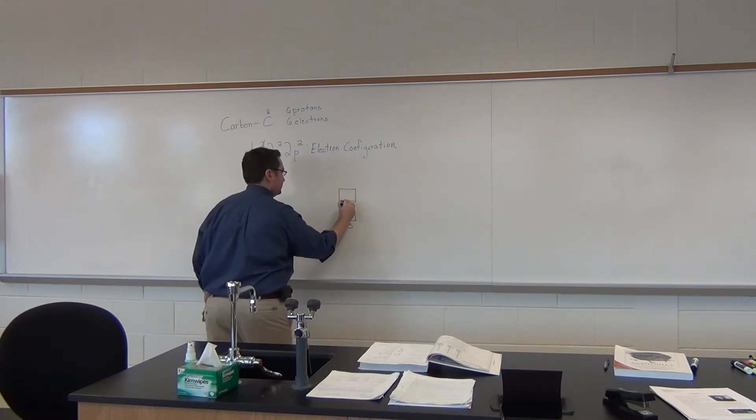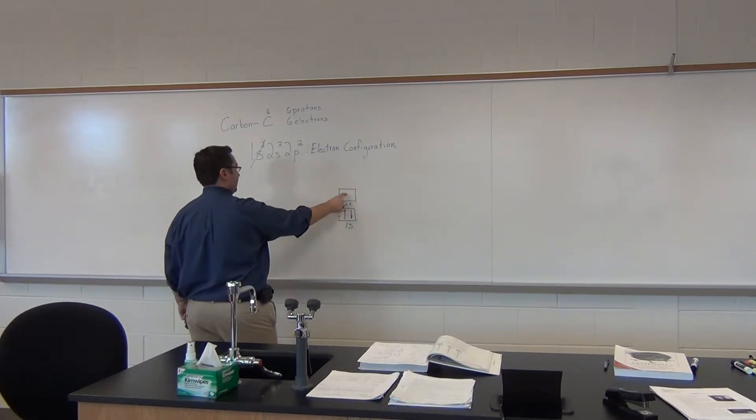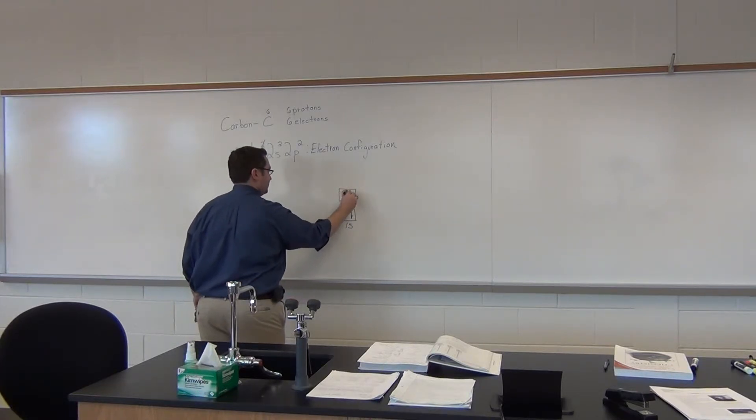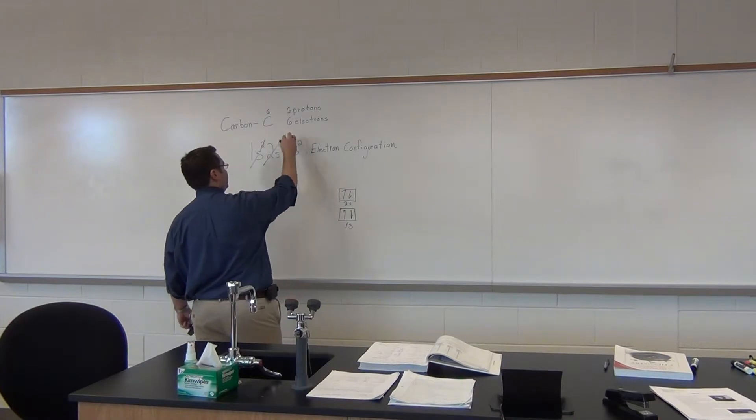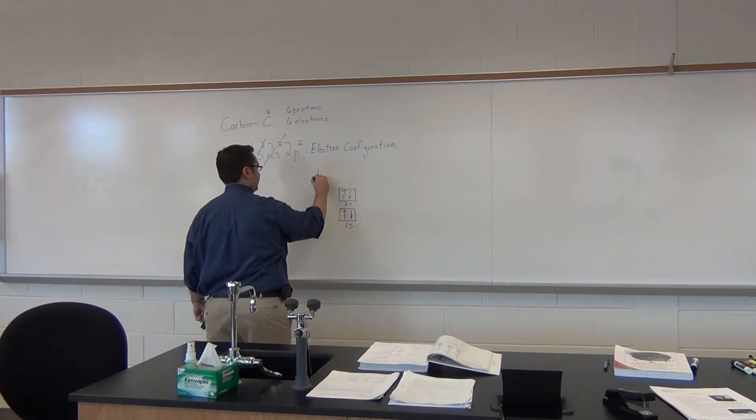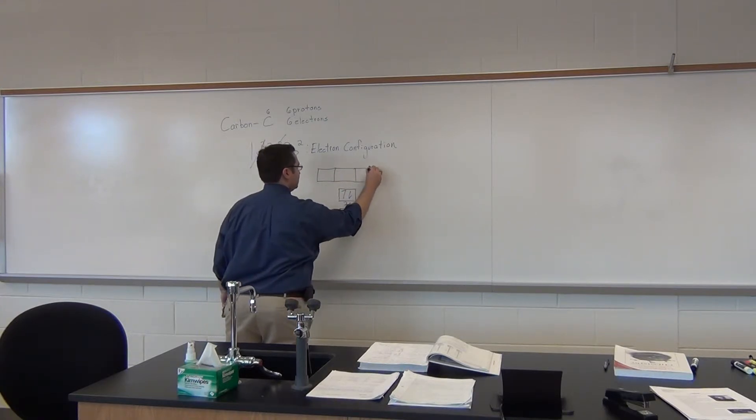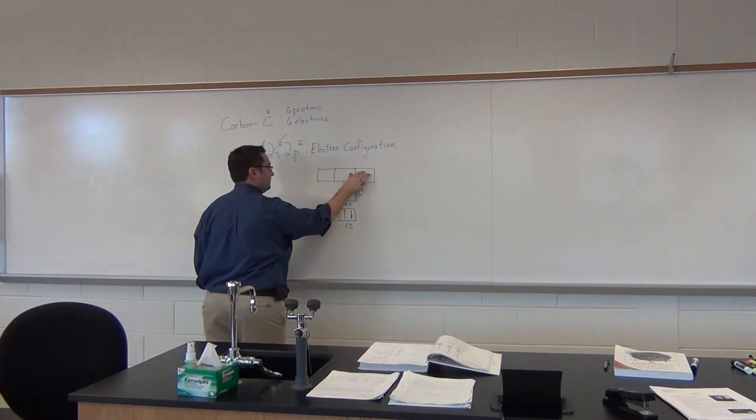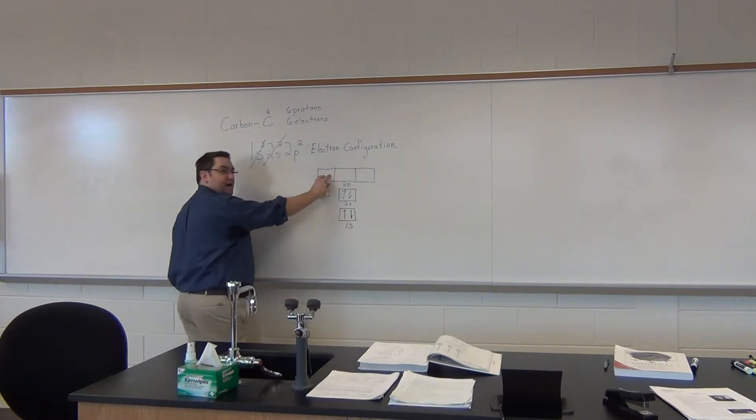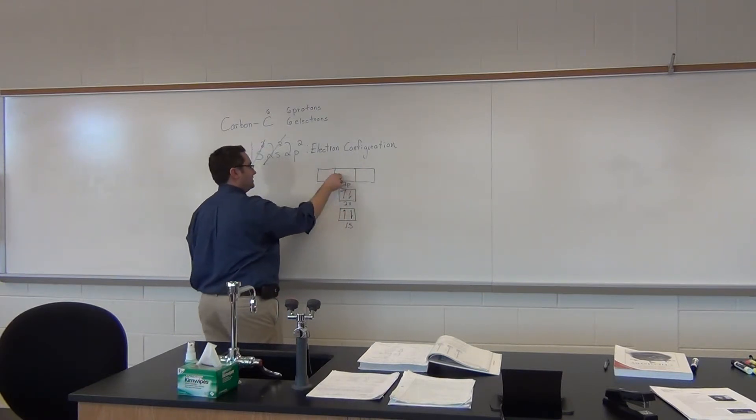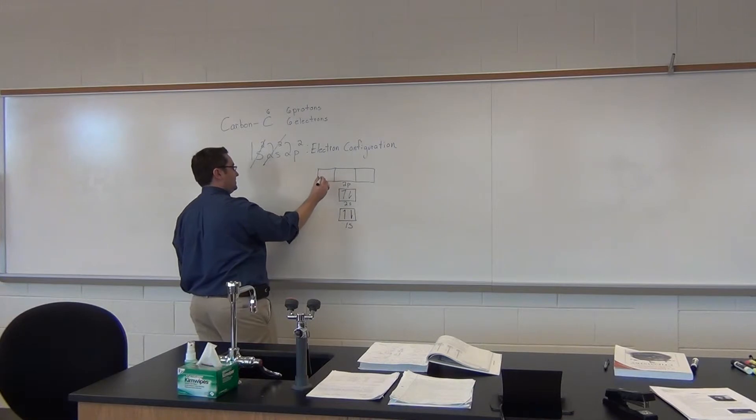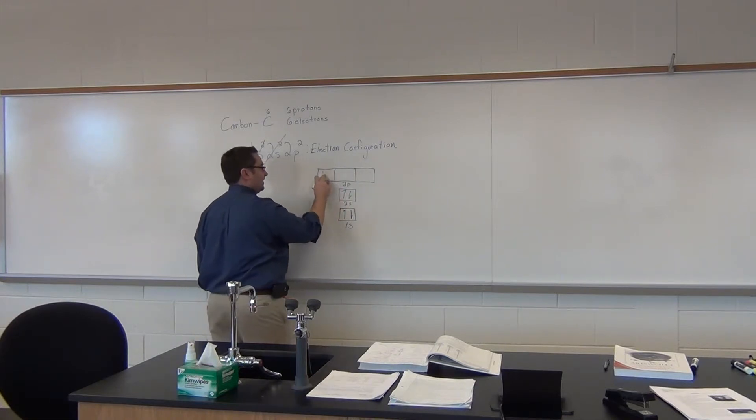Which is greater in energy than the 1s. It's still only one box, it holds a maximum of two. That takes care of those. This holds a maximum of six, it's greater in energy than the 2s. So we'll write 2p, and then remember the order of fill - they won't pair up until each one of the boxes holds an electron.